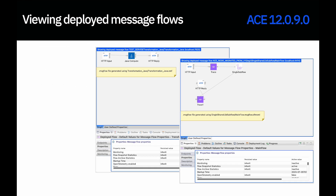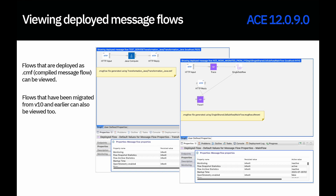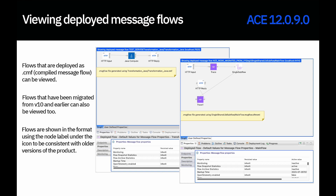In 12.0.9, we've enhanced this capability so that you can now view message flows that were deployed as CMF, which means compiled message flow. You can also view message flows which have been migrated from version 10 and earlier. These types of flows were not available to be viewed in 12.0.8, but you can now view them in 12.0.9. The flows are shown in the format where the label is shown underneath the icon, to be consistent with older versions of the product. Note that sub flows cannot currently be viewed when viewing the message flow.